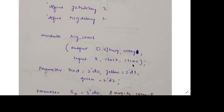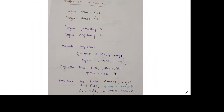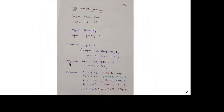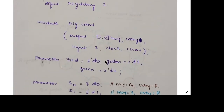If clear is 0, the system goes to the next state; if clear is 1, it goes to the default state S0. Then parameters define the colors: red is 2-bit 00, yellow is 2-bit 01, and green is 2-bit 10. The parameter keyword defines these various colors with 2-bit binary values.